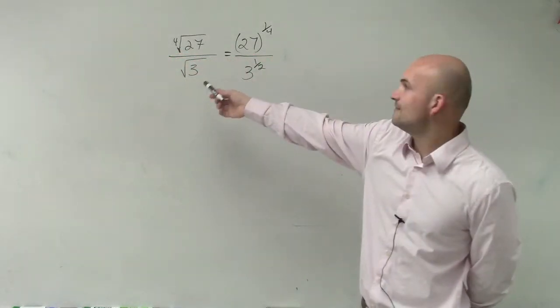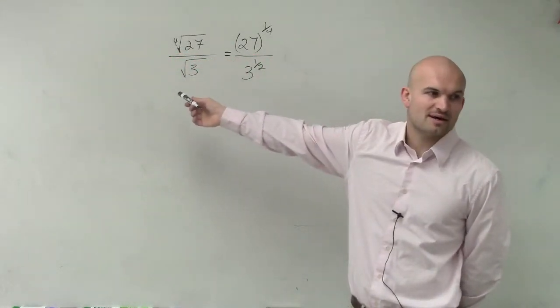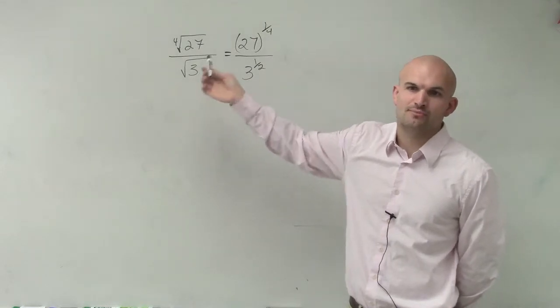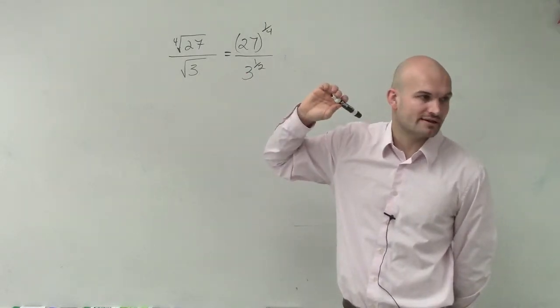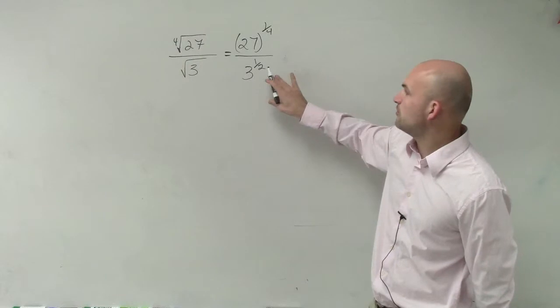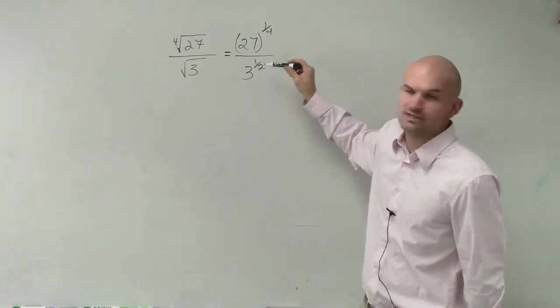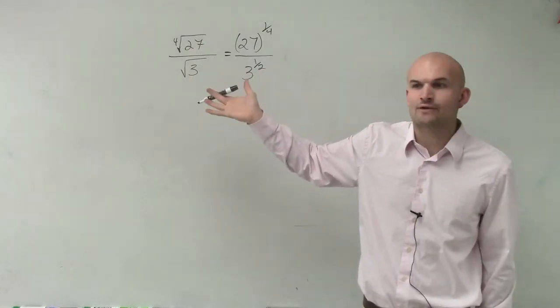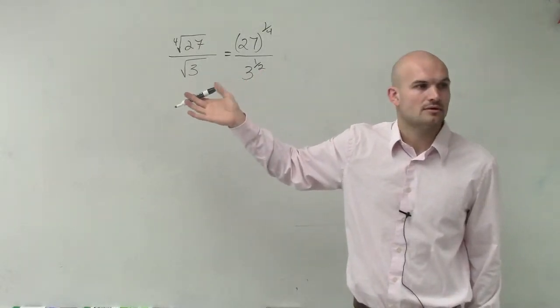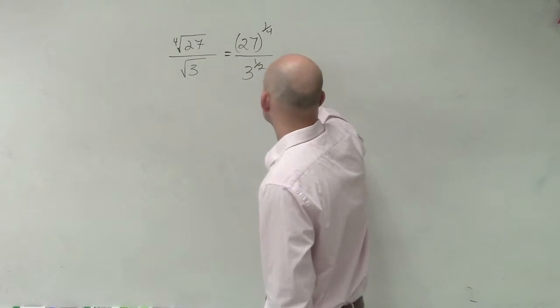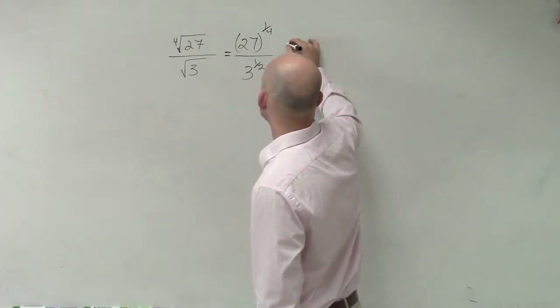Now, you guys already know how to, if I was going to do this, if I want to simplify this by radicals, you know you can multiply by the square root of 2 over 2 on the top and bottom. What do I need to multiply by my denominator by then to get that to be 3 to the first power? What do I need to add 1 half to to get it to 1? 1 half. Therefore, I need to multiply by 3 to the 1 half power on top and bottom.